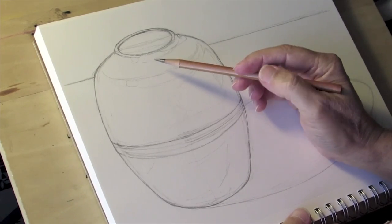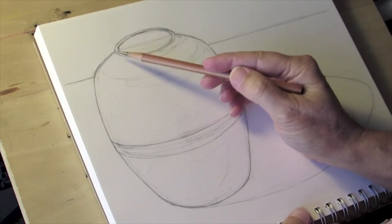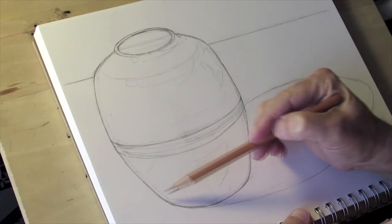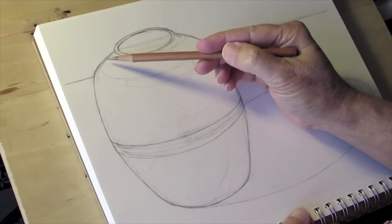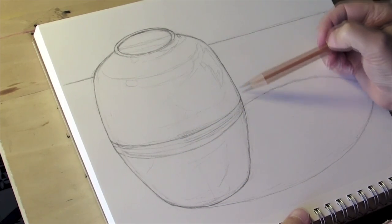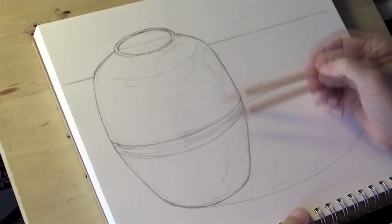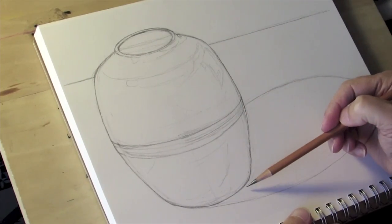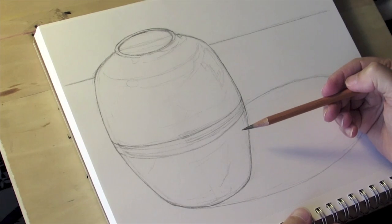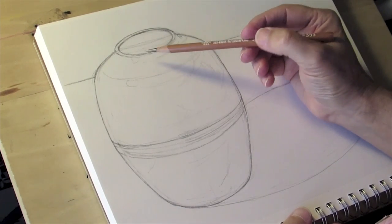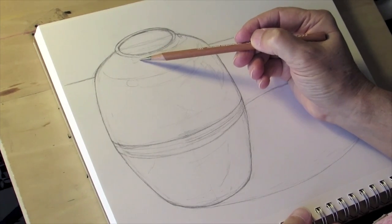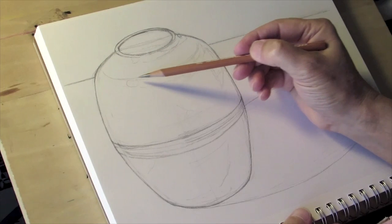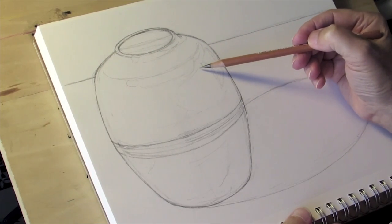Before I start introducing any tonality at all, I want to make sure that the curve on this side is identical to the curve on that side since this is a symmetrical object. The next thing that I did in the drawing was to very lightly map out some of the tone shapes that are occurring in our subject.